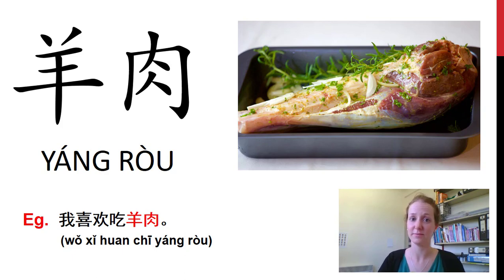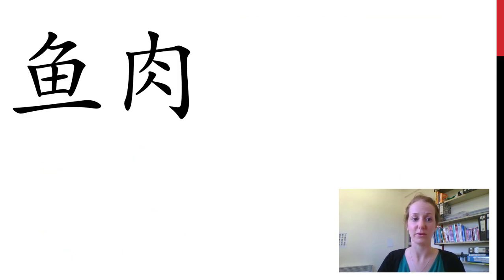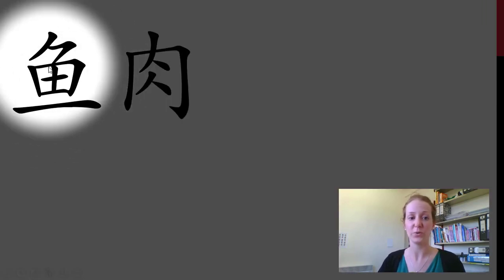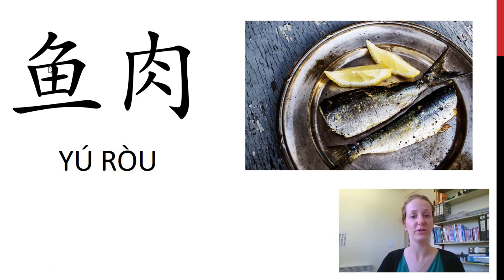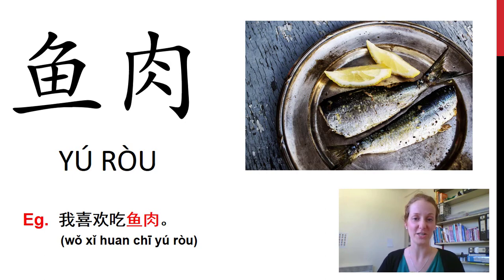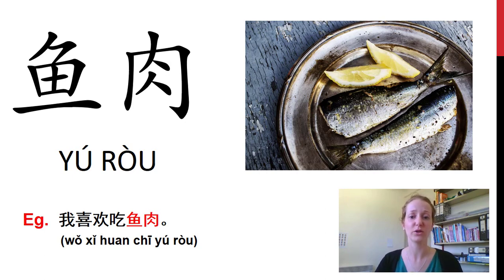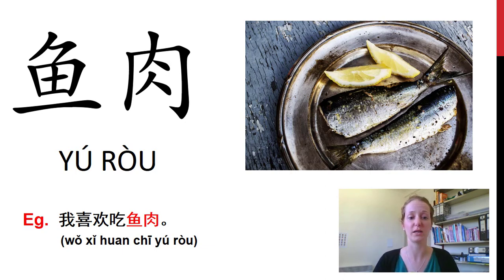你呢? And the last meat — 这是什么? 这是鱼. 鱼肉. Fish. 你喜欢吃鱼肉吗? 我喜欢吃鱼肉. With fish, we can either just say 鱼 or we can say 鱼肉 — fish meat literally.